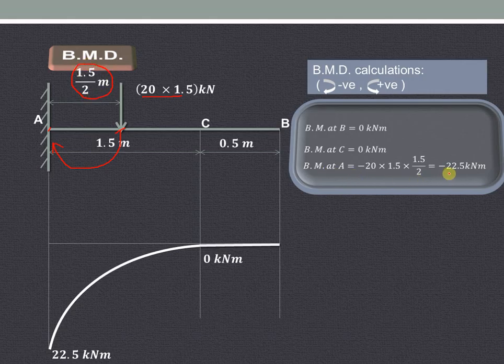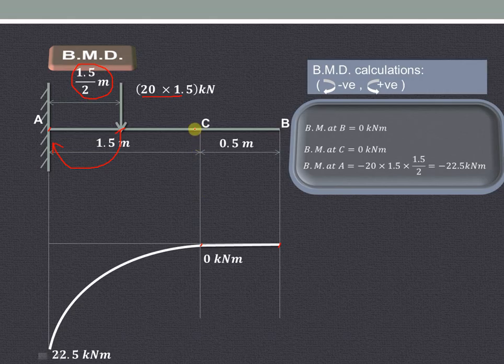The bending moment at A is minus 22.5 kilonewton meter. So at B it is 0, at C it is 0, and at A it is 22.5 kilonewton meter. Between C and A, since there is a UDL, it is a parabolic curve as shown. In this way we can draw the shear force and bending moment diagram in case of a cantilever beam.